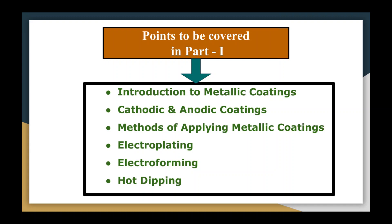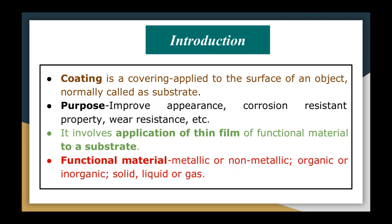Let us begin with the introduction. Coating is a covering that can be applied to the surface of an object, normally called a substrate. The purpose of applying a coating is value enhancement of the substrate by improving its appearance, corrosion resistance, and wear resistance. The process of coating involves application of a thin film of a functional material onto the substrate, and the functional material may be metallic or non-metallic, organic or inorganic, solid, liquid, or gas.